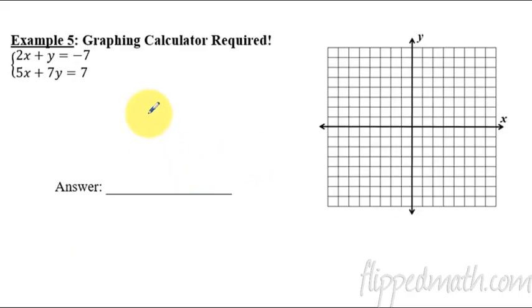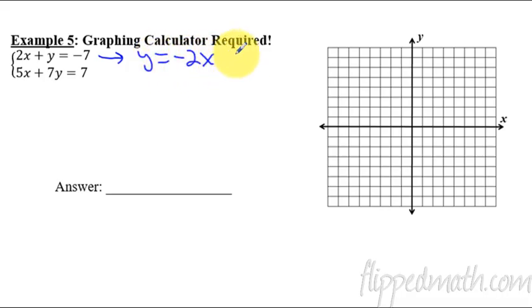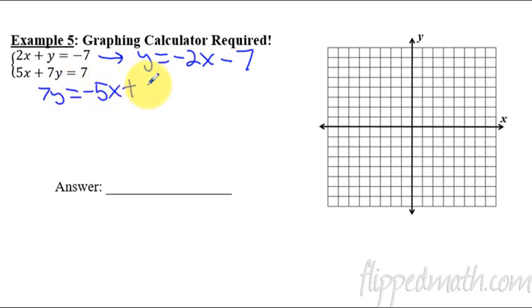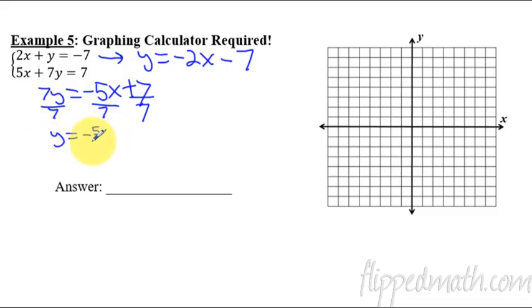That's what's called a standard window when we change that. Everything we do today and on your practice is going to be a nice, easy standard window. First thing to do before we can even use the calculator at all on these is we have to solve for y. So let's rewrite this equation. Subtract 2x from both sides — y equals negative 2x minus 7. There's one equation. Now on this one, 7y equals negative 5x plus 7. Divide each term by 7, and that leaves me with y equals negative five sevenths x plus 1.